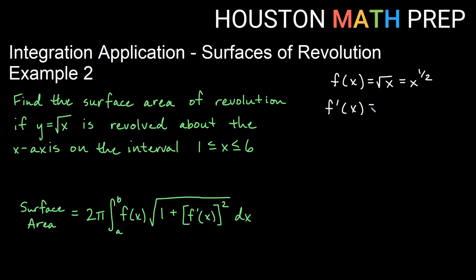So our f prime of x using the power rule: the one-half comes out front, subtract one from that to get x to the negative one-half. We might want to see that as one over two root x. When we square this, we get one on top, the two becomes four on the bottom, and the square root of x squared gives us just x in the denominator.